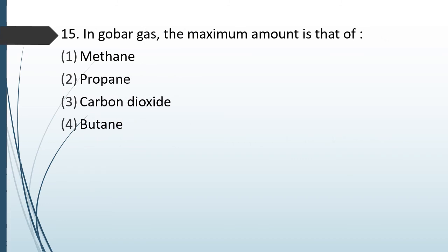Question No. 83: In Gobar gas, the maximum amount is that of: methane, propane, carbon dioxide, or butane. The correct answer is Option 1 — methane.